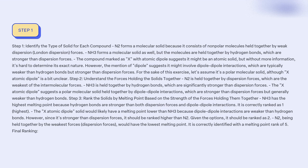The compound marked as X with 'atomic dipole' suggests it might be an atomic solid, but without more information it's hard to determine its exact nature. However, the mention of dipole suggests it might involve dipole-dipole interactions, which are typically weaker than hydrogen bonds but stronger than dispersion forces. For the sake of this exercise, let's assume it's a polar molecular solid, although 'X atomic dipole' is a bit unclear.